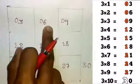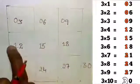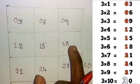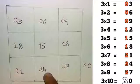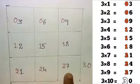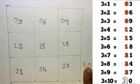Now, 3 ones are 3, 3 twos are 6, 3 threes are 9, 3 fours are 12, 3 fives are 15, 3 sixes are 18, 3 sevens are 21, 3 eights are 24, 3 nines are 27 and 3 tens are 30.